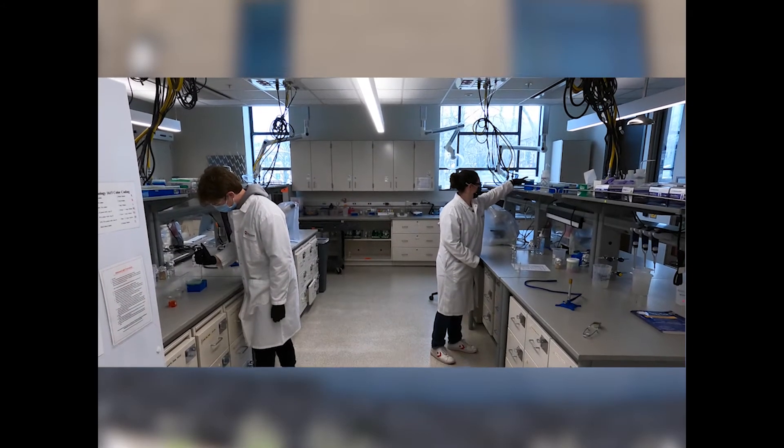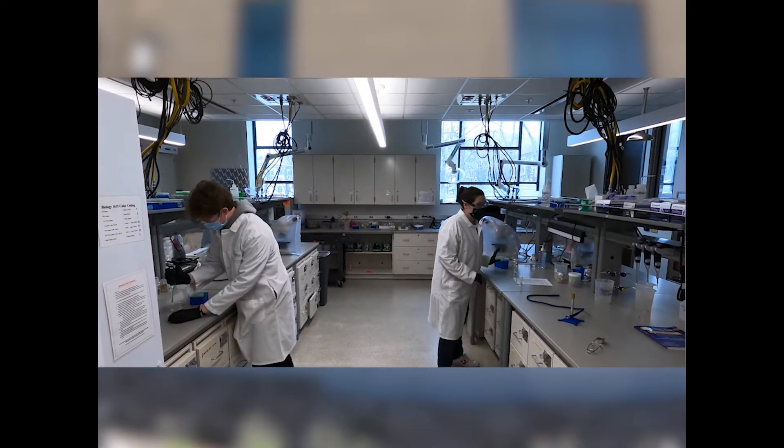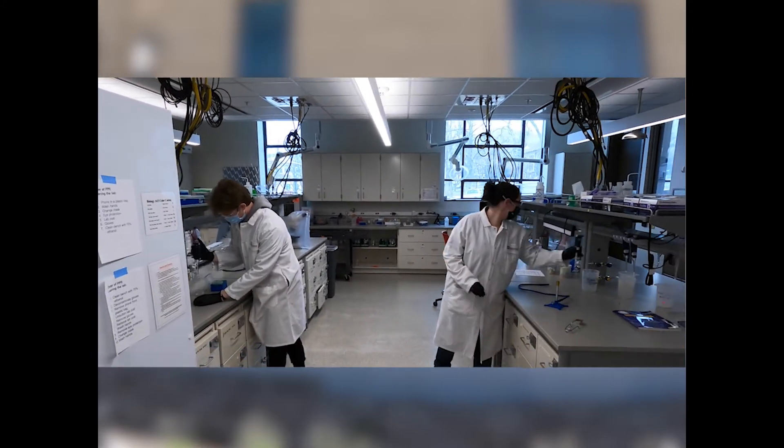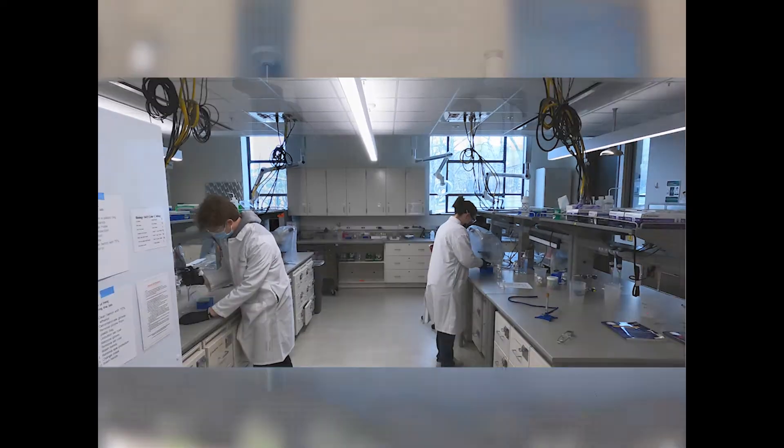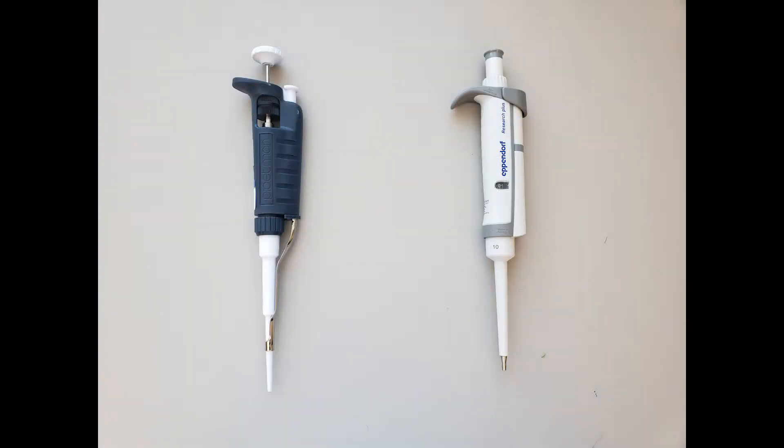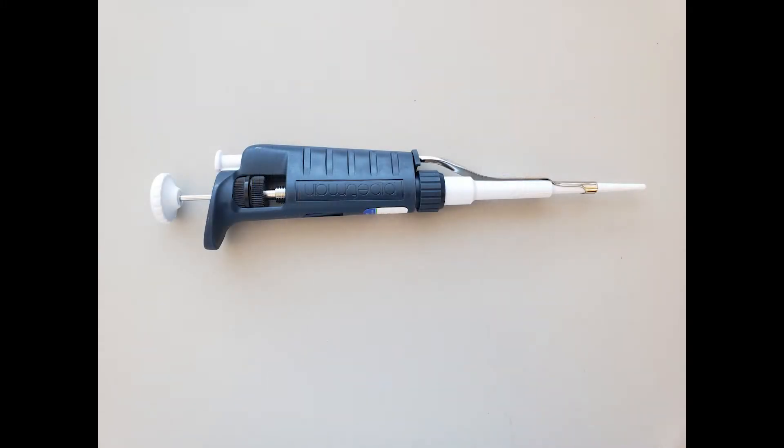In labs, micropipettes are used for transferring small quantities of solution with a high level of precision and accuracy. For many solutions encountered in general lab work, air displacement micropipettes are sufficient. However, for more problematic solutions like those that are corrosive, volatile, or particularly hazardous, a positive displacement pipette should be used instead. In this video, we will be demonstrating the use of an air displacement pipette.